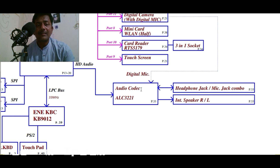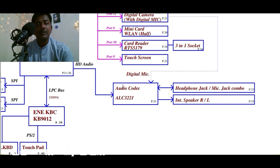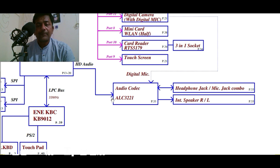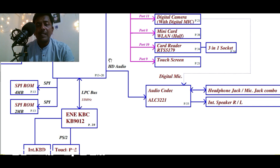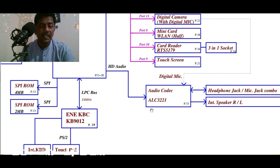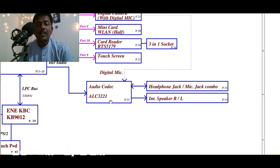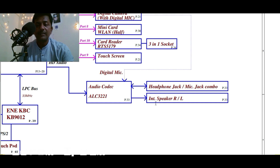There are many tracks and channels depending on the IC. Channels can be mono, stereo, 2.1, 3.1, or 5.1 — it depends on the IC. In this particular schematic, the PCH connects to the codec through HD audio. The communication between PCH and the codec happens through HD audio. The codec is also connected with the mic jack or headphone jack plus the speakers.